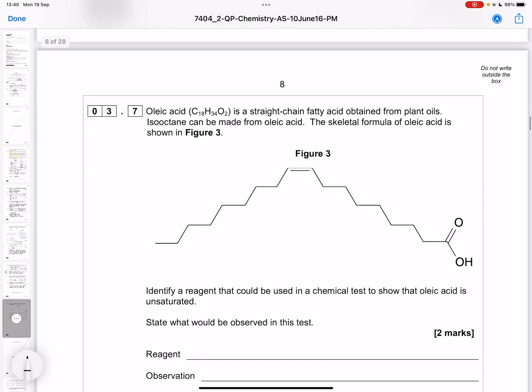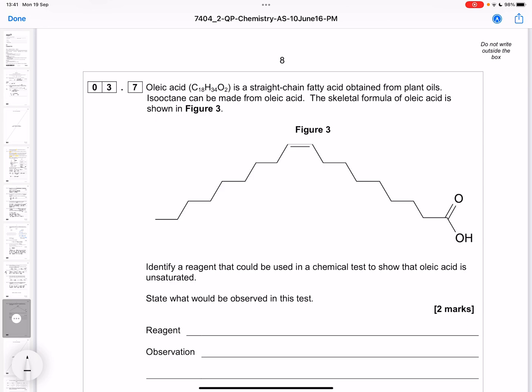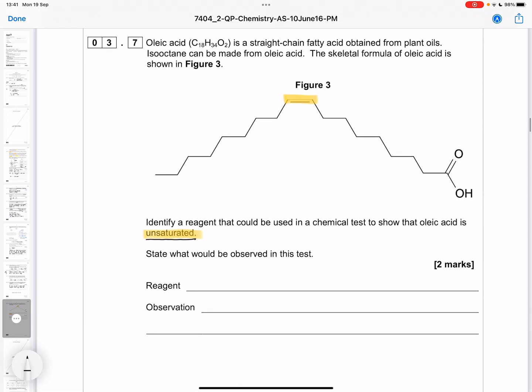The final part of this question says oleic acid is a straight chain fatty acid obtained from plants. Isooctane can be made from oleic acid. The skeletal formula is shown below. Identify a reagent that could be used in a chemical test to show that it's unsaturated. Unsaturated is where we have a carbon-carbon double bond. We would use bromine water or aqueous bromine to test for a carbon-carbon double bond.